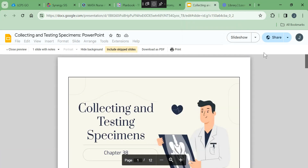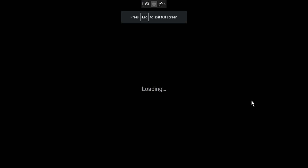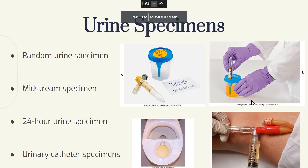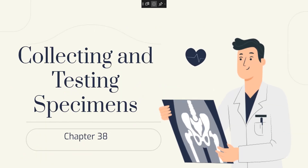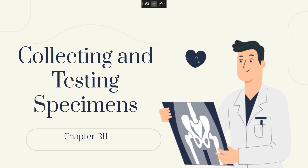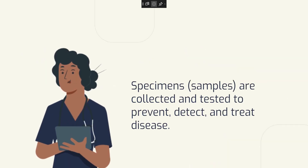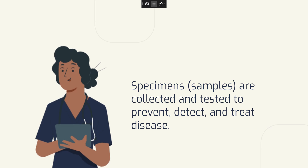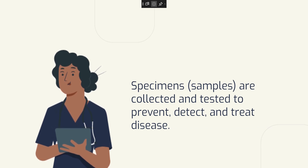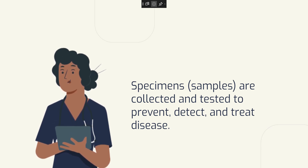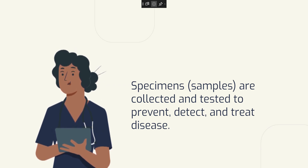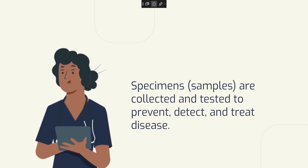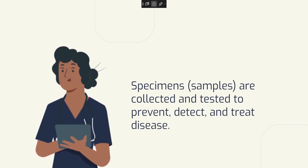Today we're going to talk about collecting and testing specimens. This information can be found in chapter 38 of your textbook. Specimens or samples are collected and tested to prevent, detect, and treat disease. Some specimens are tested at the bedside, for instance a patient's blood sugar, but most are tested in the laboratory. All laboratory specimens require requisition slips with identifying information and the test order.